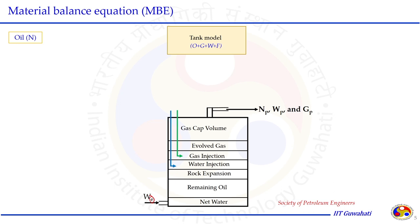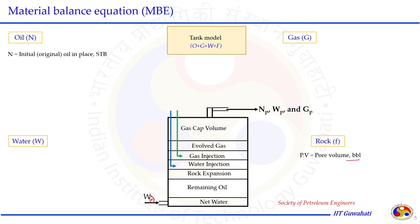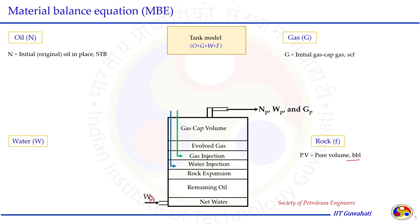In the tank model, oil is N, gas is G, water is W, and the rock (formation) is F. The rock has pore volume (PV, in BBL) that accommodates oil, gas, and water. N represents initial or original oil in place, measured at surface STB conditions; G represents the initial gas cap present at reservoir pressure, measured in SCF. Formation volume factors (Boi for initial oil, BGI for initial gas) relate surface to reservoir conditions.